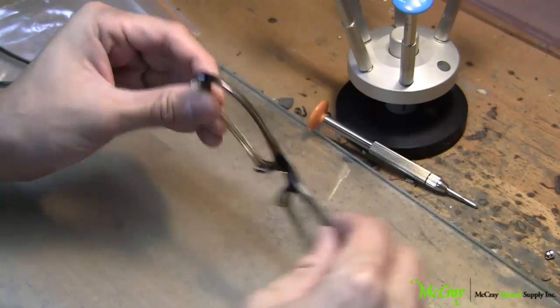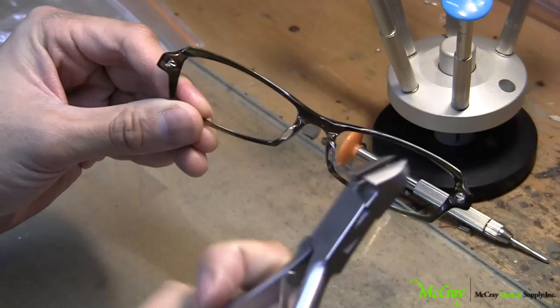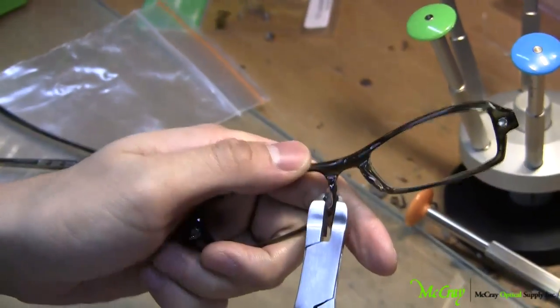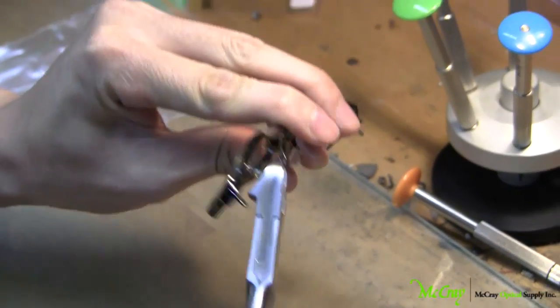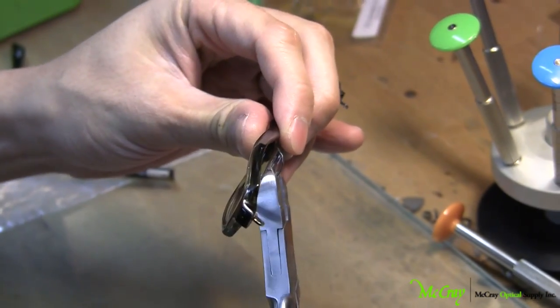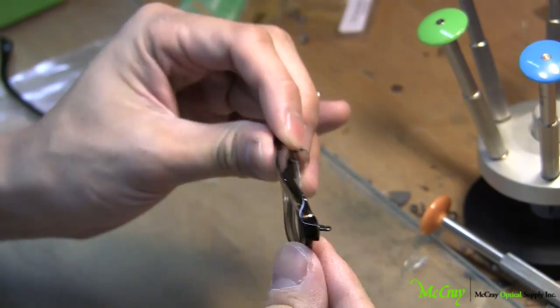Now once the temples have been removed, what we want to do is to take the cutter and now proceed to remove the actual nose pad support portion. That's very simple to do. Now make sure you don't cut it too deep so that you don't really have much to work with afterward, so give yourself a little bit of leeway and begin to snip. So one snip or two snips usually will be enough to remove it.